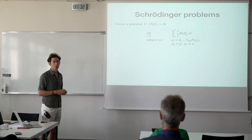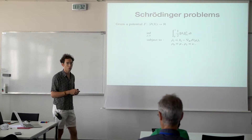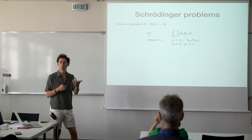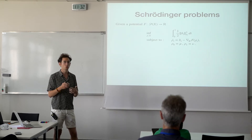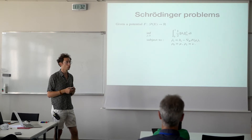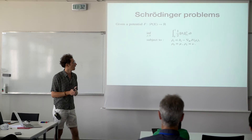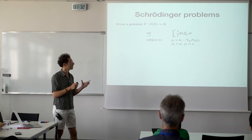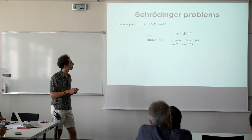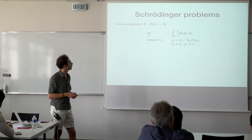Now I can introduce the generalized Schrödinger problem. As we've seen in the previous talk, you can introduce the Schrödinger problem in different ways — using the language of stochastic calculus or PDEs. Here I want to focus on a slightly different, more geometric viewpoint: the Wasserstein geometry viewpoint. You start with a potential F on the probability measures and you're interested in a controlled gradient flow problem.